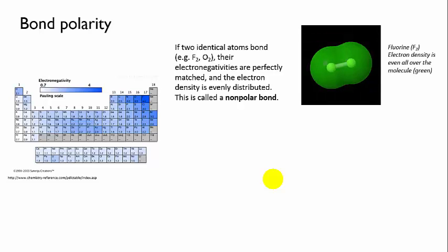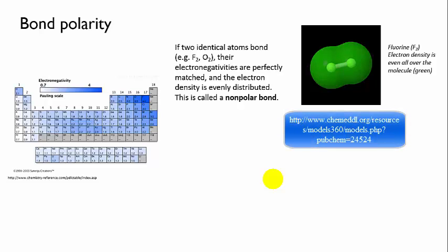And this means that they both exert an equal pull on the electron density, so it's evenly shared between them. This picture from the Molecules 360 database illustrates this by showing a whole fluorine molecule coloured green, which indicates that there is even electron density around the molecule.